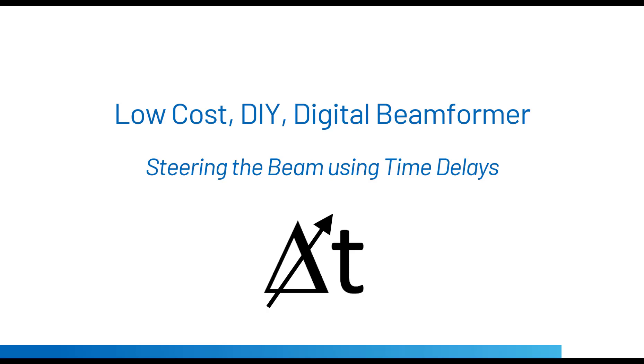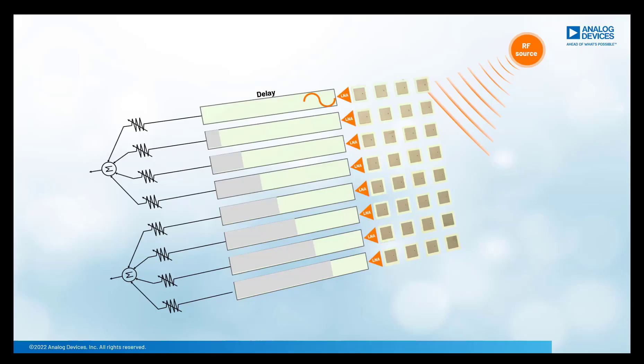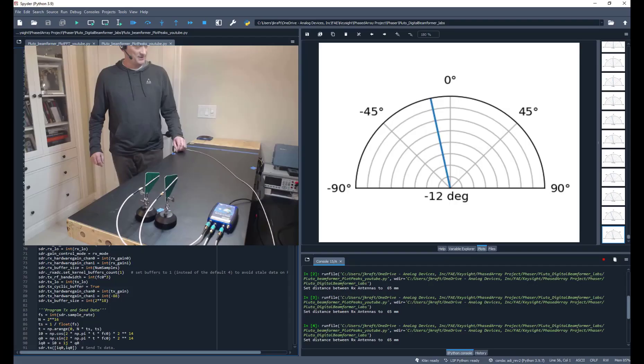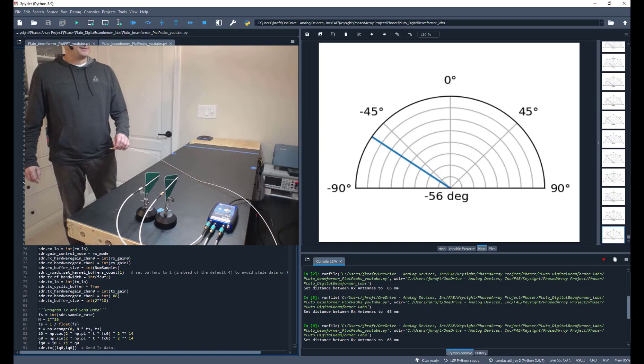Hello, everyone. This is the third video in our low-cost DIY digital beamforming series using the ADALM Pluto software-defined radio. If you haven't seen the first video in this series, I really recommend that you start there. In that video, we described the purpose, the setup, and the equations to create a two-element digital beamformer. In that video, we used phase shifters to form the beam, but we could have used time delays instead. And that's what we're going to do in this video.